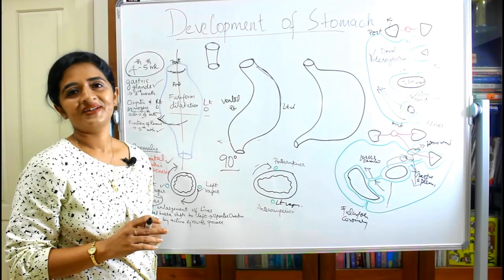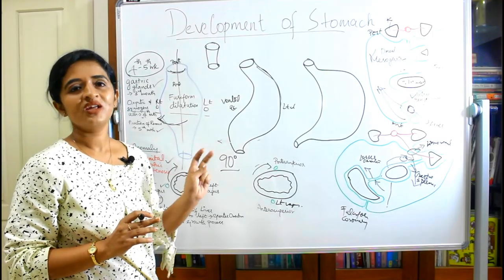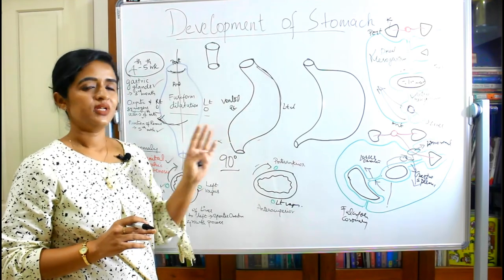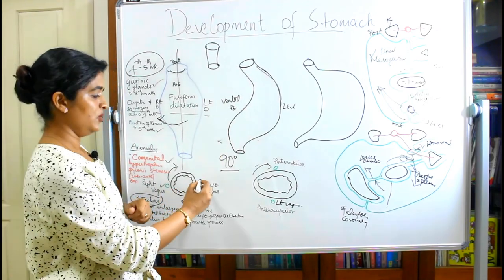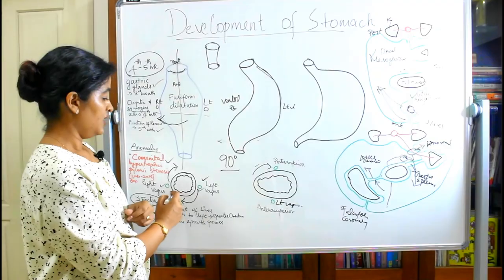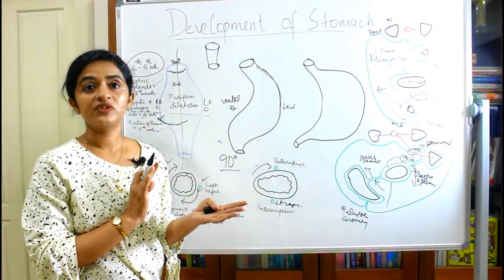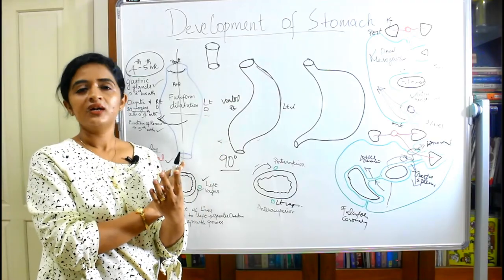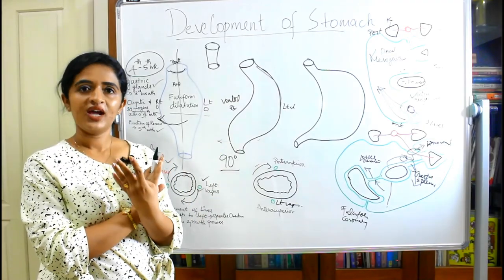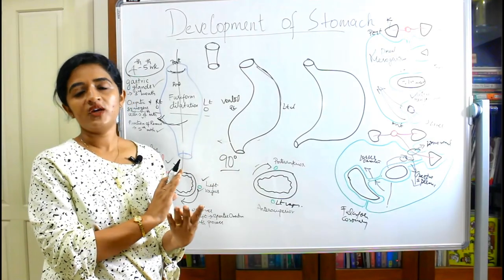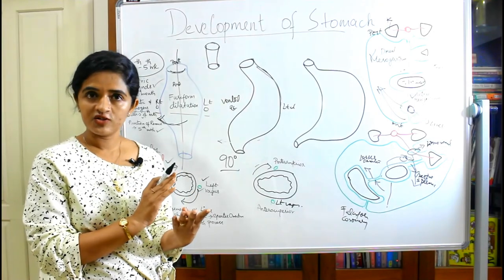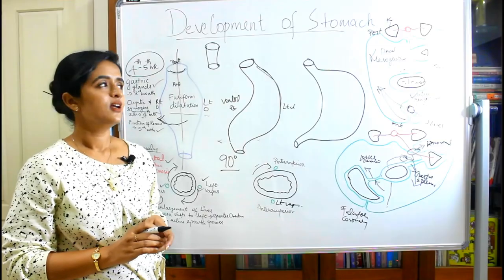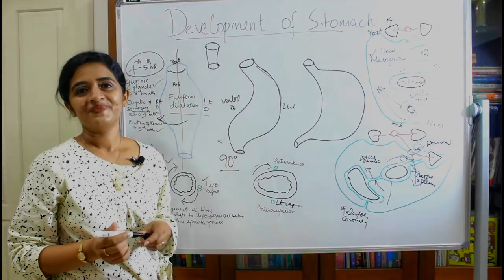In summary, the stomach undergoes a 90-degree rotation along with differential growth of the dorsal aspect. The two important points to remember are: the right vagus nerve goes to the posterior and becomes the posterior vagal trunk, and the left vagus nerve comes to the anterior and becomes the anterior vagal trunk. That covers the development of the stomach.